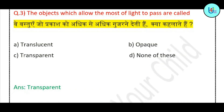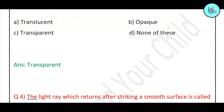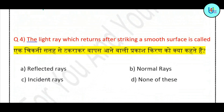Question number 4: The light ray which returns after striking a smooth surface is called — reflected rays, normal rays, incident rays, or none of these? Correct answer is: reflected rays.